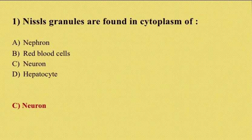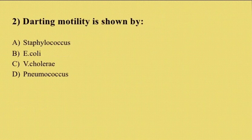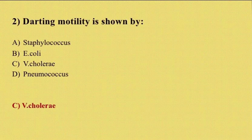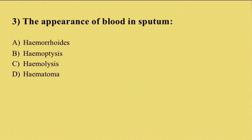The second question: darting motility is shown by option A Staphylococcus, option B E. coli, option C Vibrio cholerae, option D Pneumococcus. The answer is option C, Vibrio cholerae. Staphylococcus and Pneumococcus are both non-motile, and E. coli possesses peritrichous flagella for its motility.